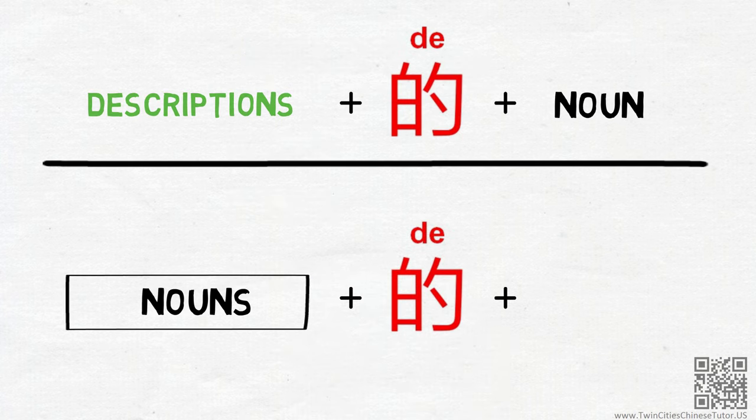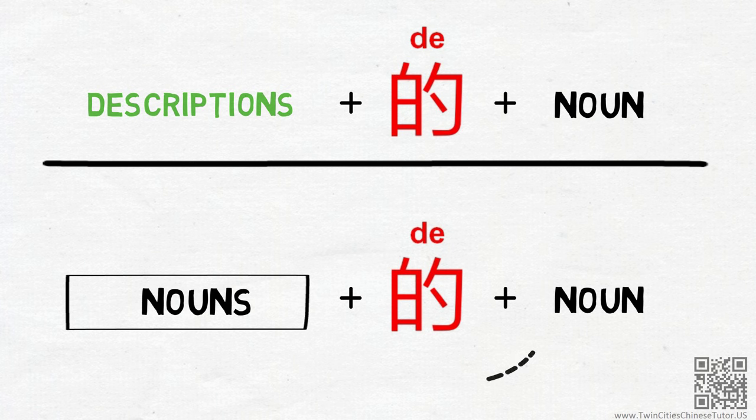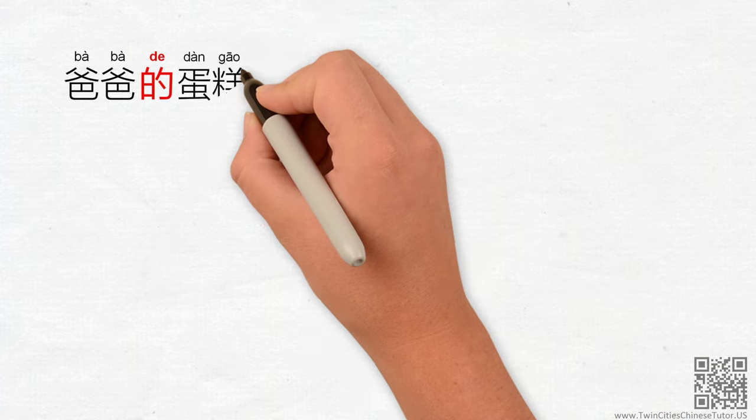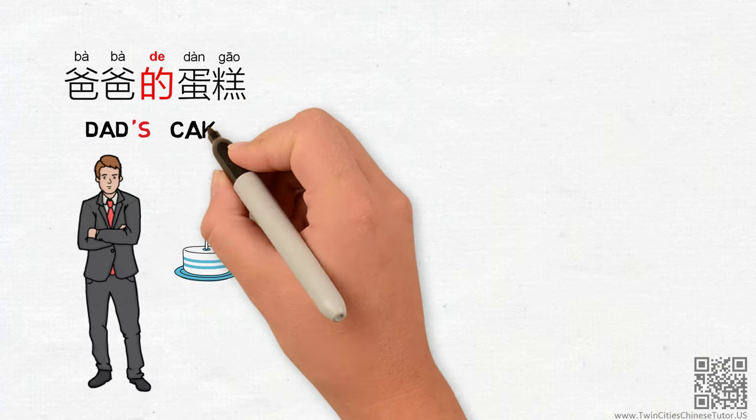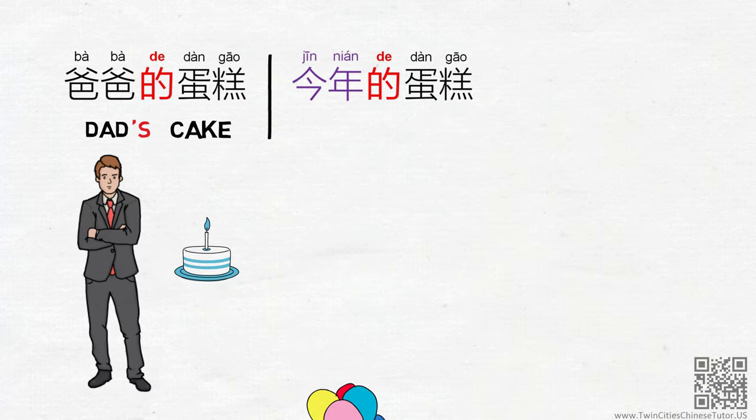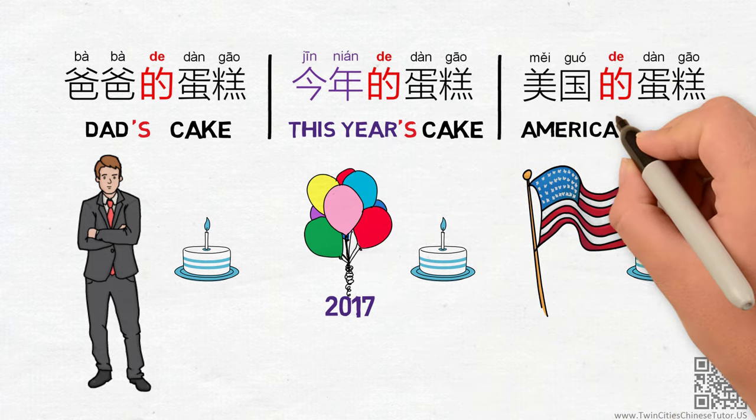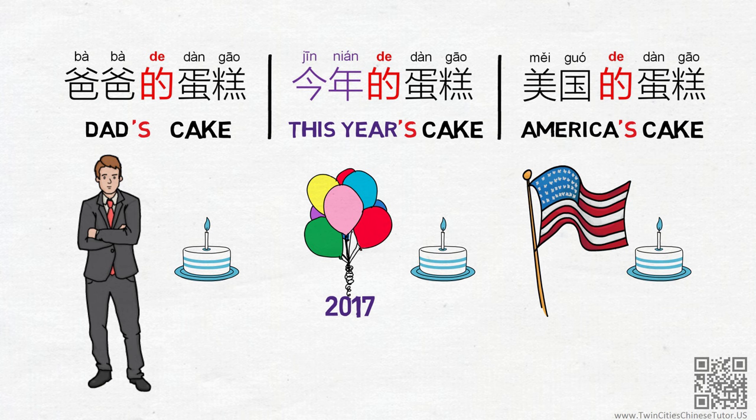When you see noun located both before and after the DE, the one before always describes the one after DE. DE here almost works like apostrophe S in English. For example, 爸爸的蛋糕 means dad's cake. 今年的蛋糕 means this year's cake. 美国的蛋糕 means America's cake or cake from America.